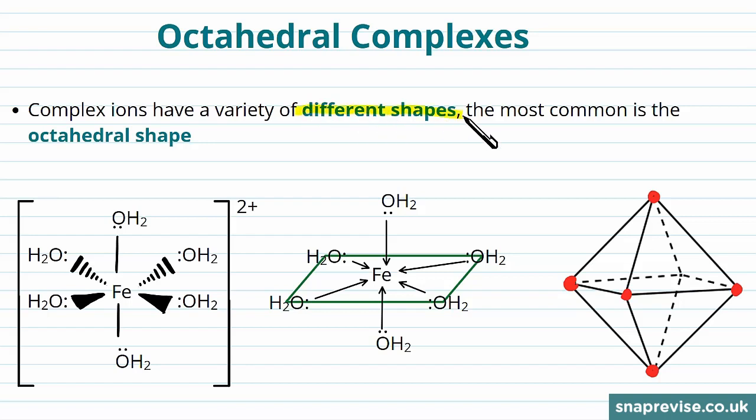Complex ions have a variety of different shapes and the most common is octahedron. An octahedron is a regular eight-faced shape. It comes in the form of two pyramids stacked on top of each other. So we've got this green pyramid at the top here, connected to this blue pyramid at the bottom and this shape together forms the octahedron.